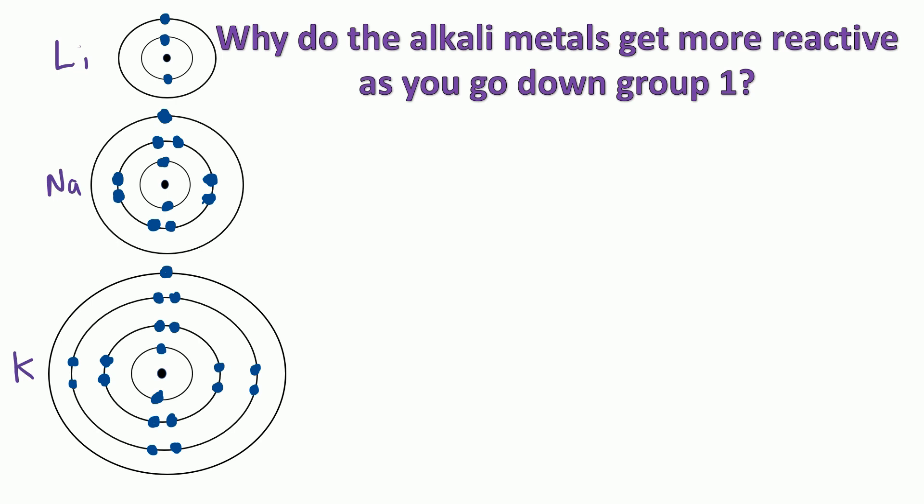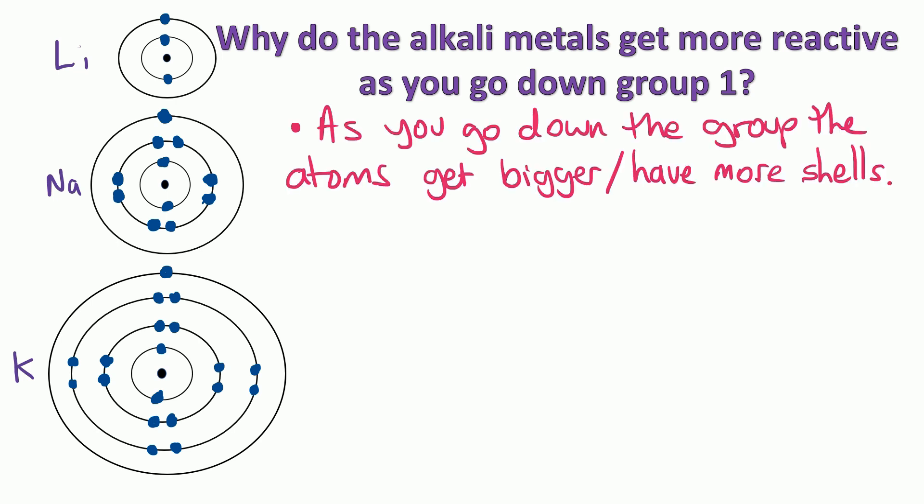The first thing that's obvious is that as you go down the group, the atoms get bigger, or have more shells. In your exam it won't show the electronic structures, so if you need a reminder, sketch out the first three electronic structures and it becomes very obvious. We've established that as you go down group 1, the atoms get bigger or have more shells.